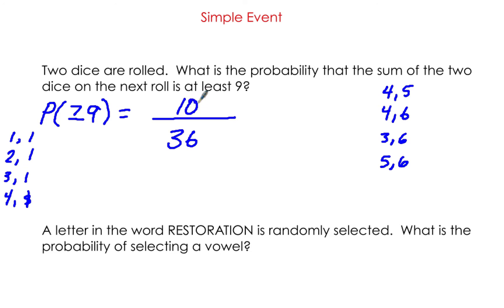So there are 10 out of 36, which simplifies to 5/18. That's the probability that the sum on the roll is at least 9 when you roll two dice.